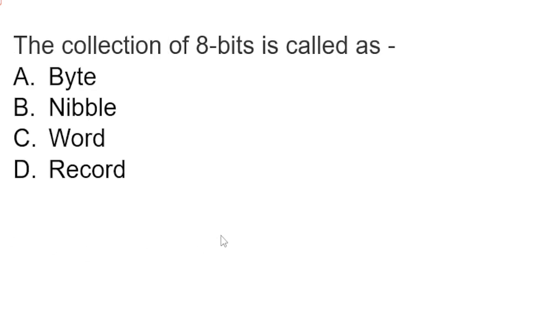Next question: the collection of 8-bit is called byte, nibble, word, record. The answer is A, byte. A byte is 8 bits. A byte is a unit of data measurement which mainly consists of eight bits. A byte is a series of binary digits zero and one. Nibble is four bits.